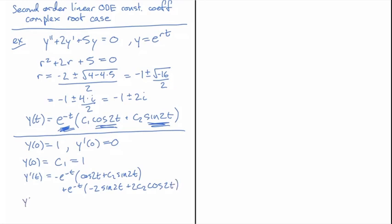And now evaluate that at 0. y prime of 0 is equal to, so we have a minus sign in front. e to the minus t is just 1. Cosine of 2t with t equals 0 is just 1. Plus c2 times sine of 0 is 0.